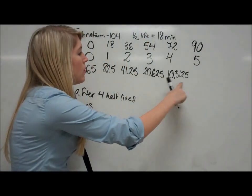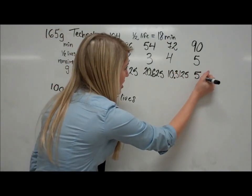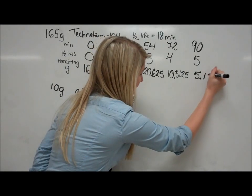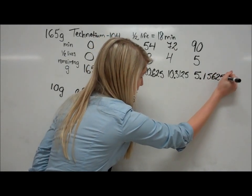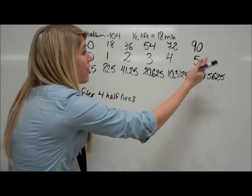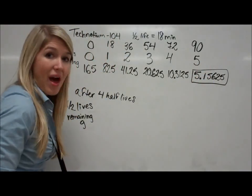And we want to know now how much is going to be left. So we half this again. And your answer will come out to 5.15625. So that's your answer. After 90 minutes and five half-lives, this is how many grams you have left.